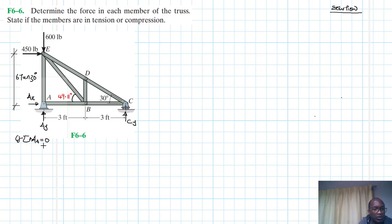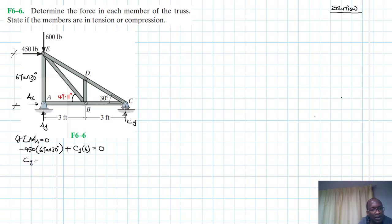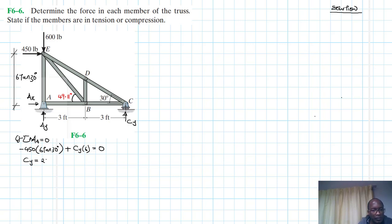Summation of moments about point A equal to zero: we have a negative moment due to 450 times 6 tan 30°. The 600-pound force does not cause any moment about point A because its lever arm is zero. Then plus Cy times 6 equals zero. Therefore, Cy equals 450 times 6 tan 30° divided by 6, giving us Cy = 259.81 pounds.